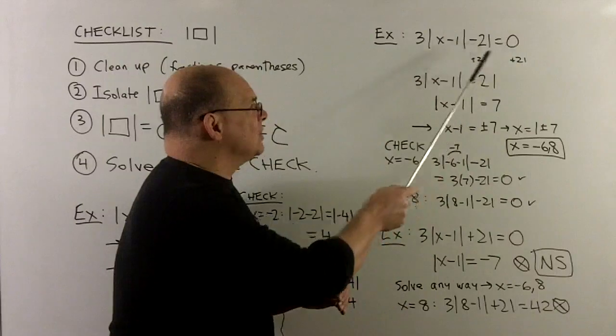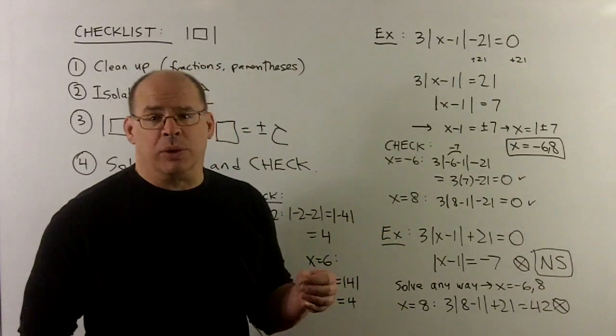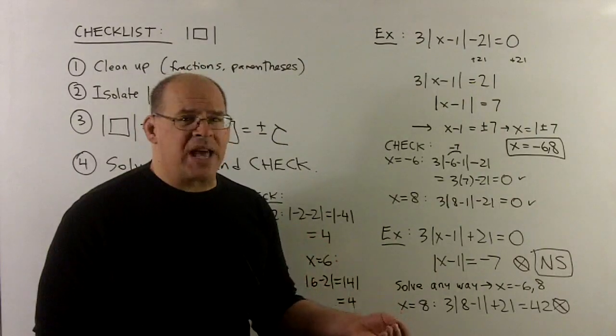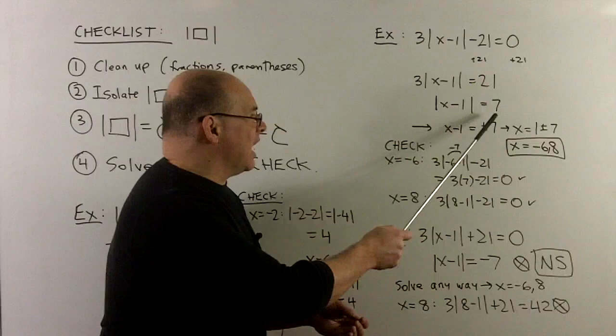I'll add 21 to both sides to move the 21 over. That gives 3 absolute value of x minus 1 equals 21. We divide both sides by 3. We get absolute value of x minus 1 equal to 7.